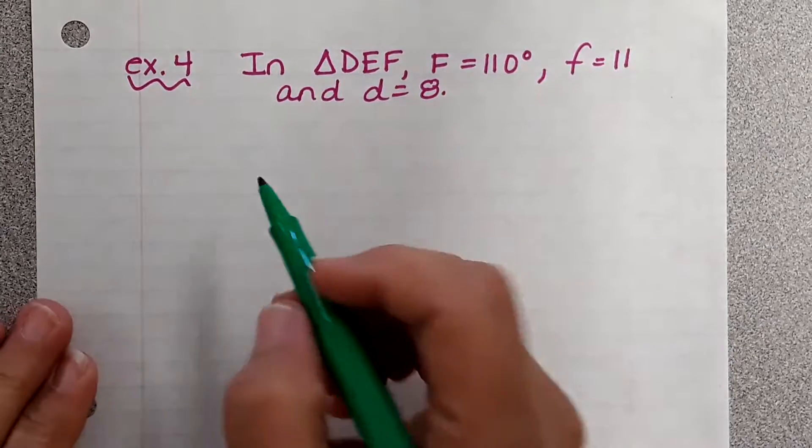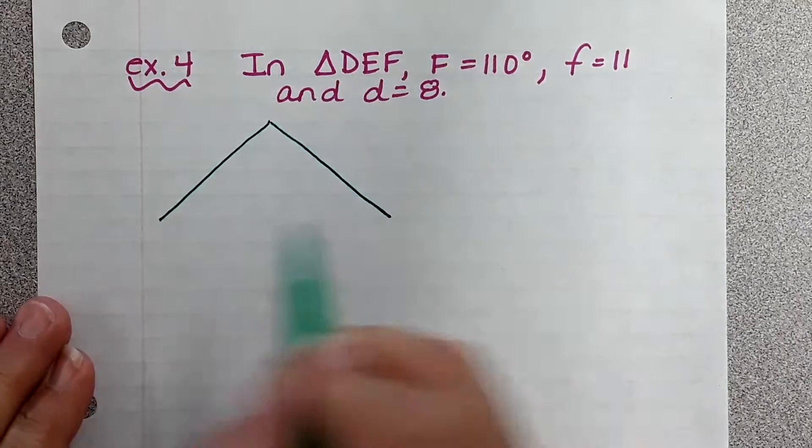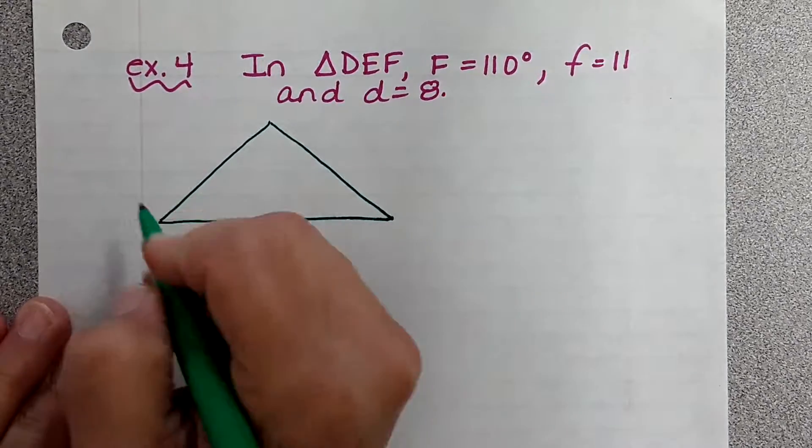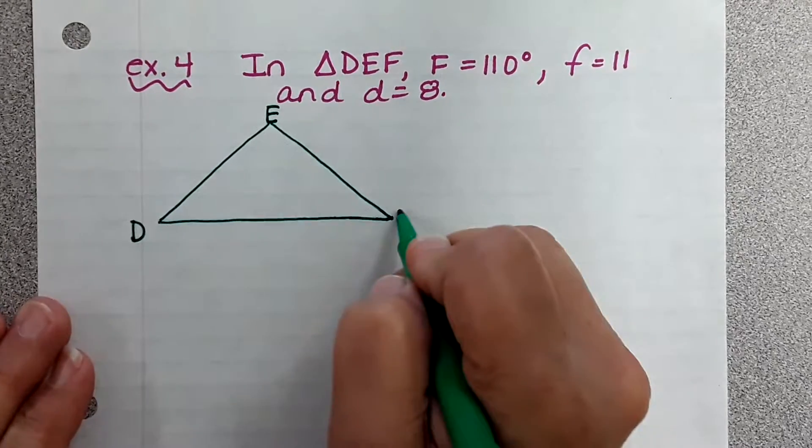Okay, so we're going to draw a triangle and we don't want it to be a right triangle because these are not right triangles. I'm going to label it D E F.